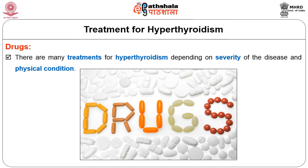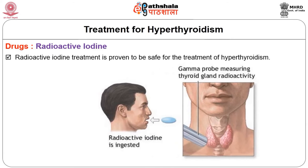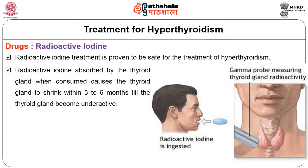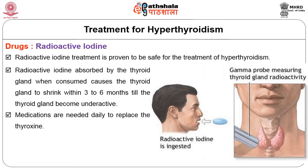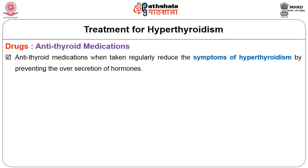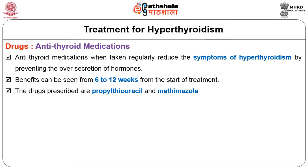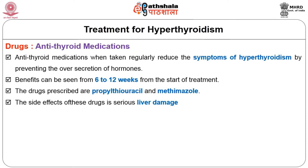The treatments for hypothyroidism include radioactive iodine, which is proven to be safe. Radioactive iodine is absorbed by the thyroid gland and causes it to shrink within three to four months until the thyroid gland becomes underactive. Medications are needed daily to replace the thyroxine level. Anti-thyroid medications, when taken regularly, reduce the symptoms of hyperthyroidism by preventing over-secretion of hormones. Benefits can be seen from 6 to 12 weeks from the start of treatment. The drugs prescribed are propylthiouracil and methimazole, whose side effects are serious and may lead to liver damage.